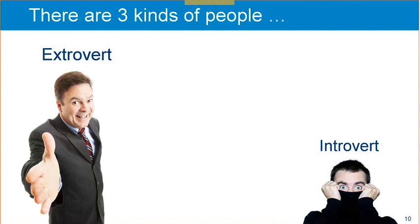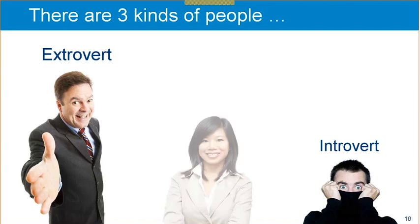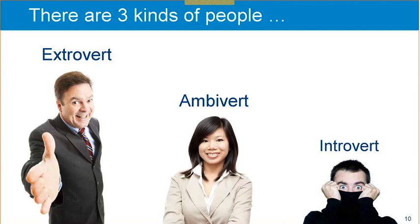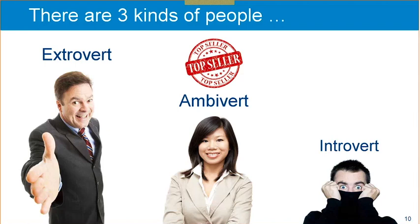Daniel Pink says there's a third kind of person. Based on research, this kind of person is actually a very effective communicator, and most of the human population falls into this category. It's called an ambivert. This person is like the Goldilocks personality — has a little bit of the extroverted, has a little bit of the introverted. And when they do studies on this and ask which of these three personality types does the better job in sales — which one makes the most sales — every time they do the research, they find that the ambivert is the top seller. This person is the most effective communicator.